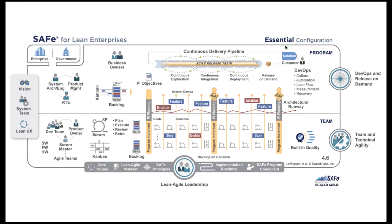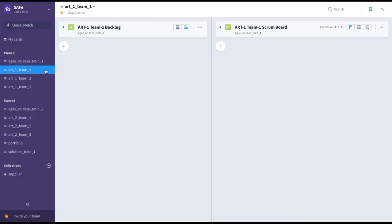Let's start with Essential SAFe. We'll begin at the Team Level and move up to a Single Agile Release Train, or ART, at the Program Level. In this example we'll be standing up a relatively simple three-team Agile Release Train.